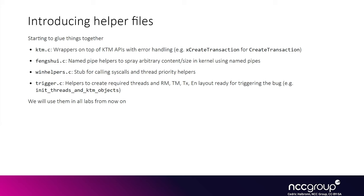We will be building the exploit gradually and splitting the exploit code into multiple files. We're introducing lots of helper functions we'll use in this lab and all future labs to glue things together and build our exploit by the end of the course. We'll have a ktm.c helper file for creating the different KTM objects like transactions and resource managers, using an 'x' prefix convention as a wrapper for public KTM functions — for example, x_create_transaction wrapping create_transaction — with error handling built in.